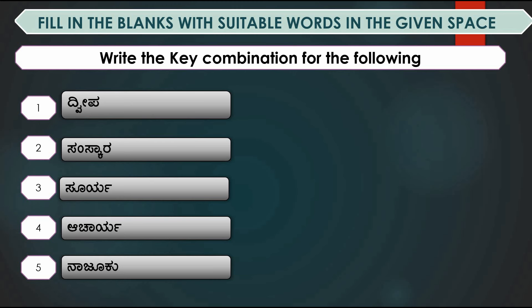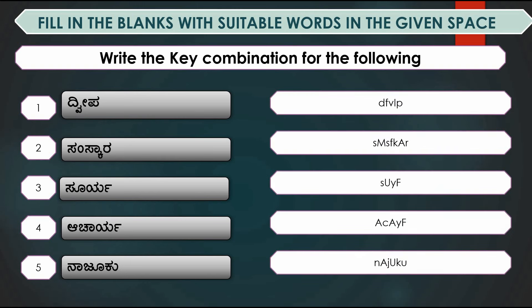Write key combinations for: Dvipa — D, F, V, capital I, V. Samskara — S, Shift+M, S, F, K, Shift+A, R. Surya — S, capital U, Y, capital F. Acharya — A, C, capital A, Y, capital F. Najoku — N, Shift+A, J, Shift+U, K, U.